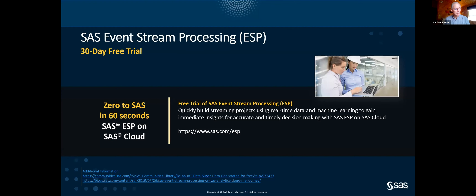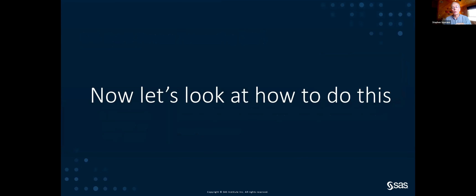There's a 30-day free trial available — just go to sas.com/ESP to sign up. It's free with no charge, and there are a number of examples already available as part of the environment, including some relatively simple computer vision versions. So I've talked about what you can do — now let's turn it over to Tom to look at how to do a lot of what I've just talked about.